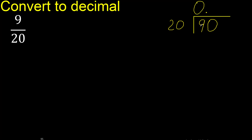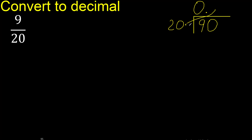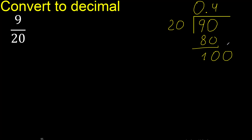Now 0.90 — 90 is not less than 20, so we find which number multiplied by 20 is nearest to 90 but not greater. 20 multiplied by 5 is 100, which is greater, so we try another number. 20 multiplied by 4 is 80. Subtract: 90 minus 80 is 10. There is no number that goes further down, so we complete with 0.